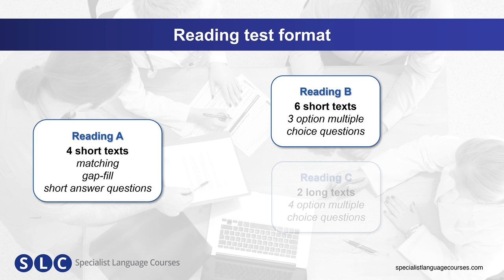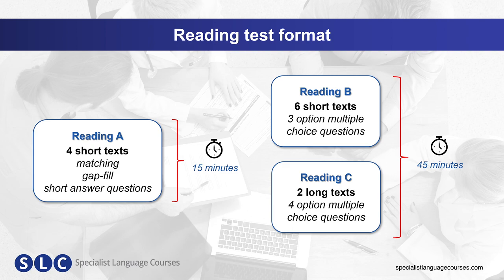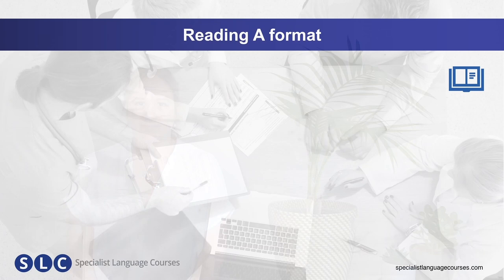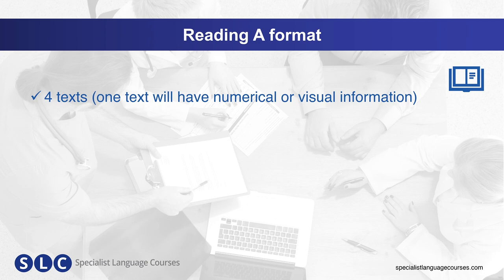So what happens in the OET reading test? Here you can see an overview of the reading exam. We are going to focus on Part A, for which you only have 15 minutes to complete before the paper is taken away. I'm going to talk through some strategies you can use to help with this time pressure. But first let's review the format of Reading A. There are four texts, and one text usually contains visual or numerical information, such as a table or a flowchart.